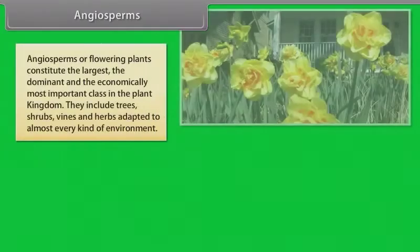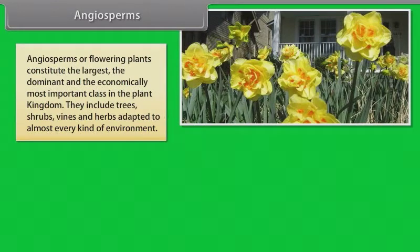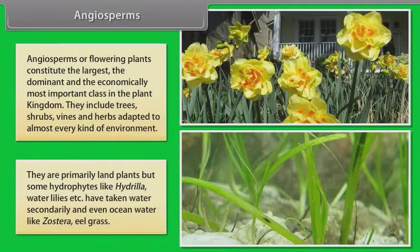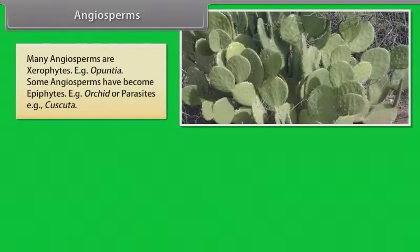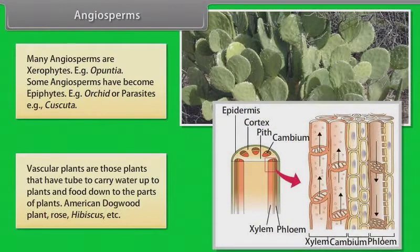Angiosperms, or flowering plants, constitute the largest, dominant and economically most important class in the plant kingdom. They include trees, shrubs, vines and herbs adapted to almost every kind of environment. They are primarily land plants, but some hydrophytes like Hydrilla and water lilies have taken to water secondarily, and even ocean water like Zostera (eel grass). Many angiosperms are xerophytes, some have become epiphytes like orchids, or parasites like Cuscuta. Examples of vascular plants include American Dogwood, Rose, Hibiscus, etc.